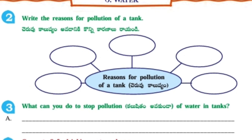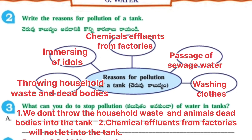Next, second one: Write the reasons for pollution of a tank. Reasons for Pollution of a Tank: Chemicals, effluents from factories, passage of sewage water, washing clothes, throwing household waste and dead bodies, immersing of idols.